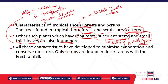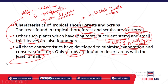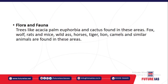All of these characteristics have developed to minimize evaporation and transpiration loss and to conserve moisture. In the desert areas with least rainfall, only scrubs are found. In the desert areas specifically you may find cactus or thorny varieties of forest.